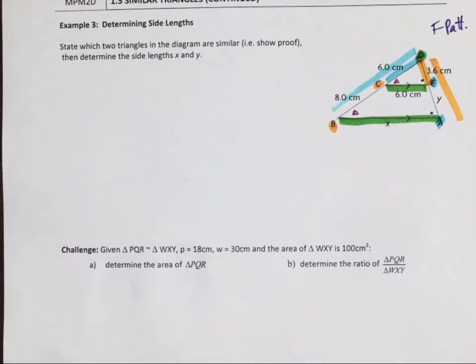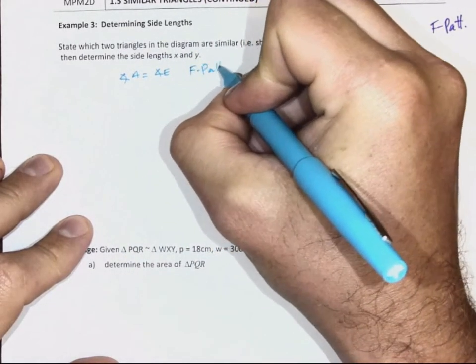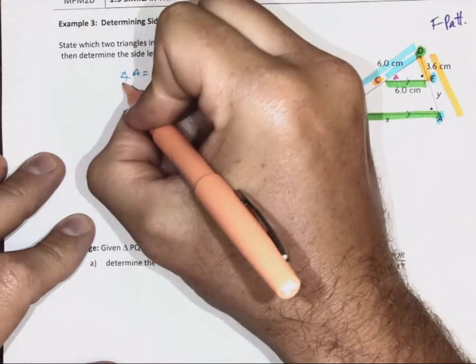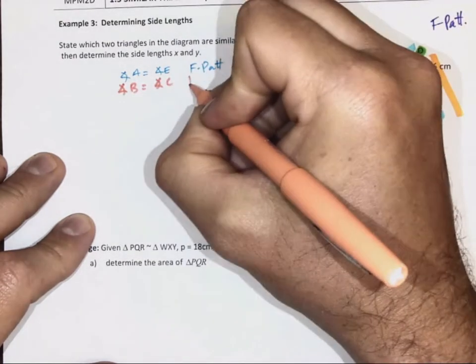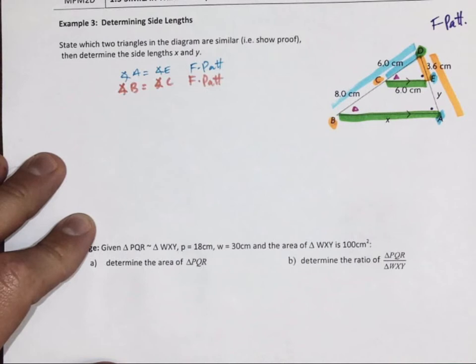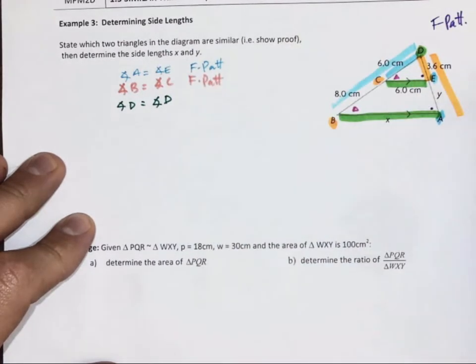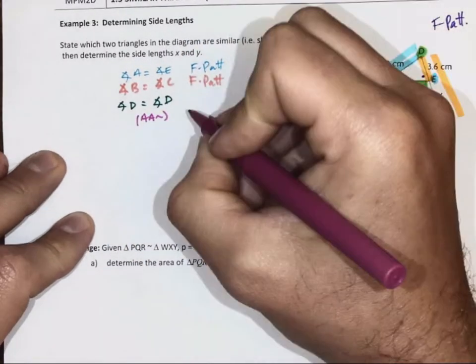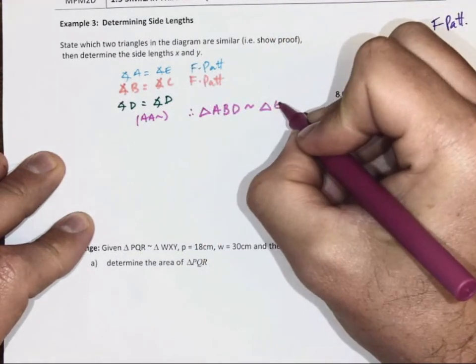So let's see what we know. Again, angle E and angle A actually match because of the F pattern rule. They have the same interior angle. And angle B and angle C match again because of F pattern. And then angle D actually matches up with angle D. So we have two angles are the same, the third angle is the same. So that means that two angles are similar. So we know therefore Triangle ABD is similar to triangle ECD. Angles and orders count.